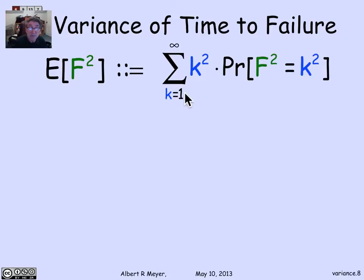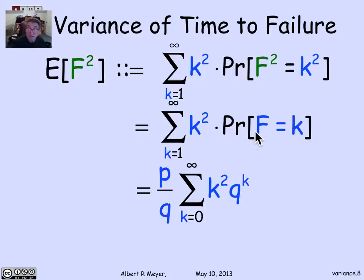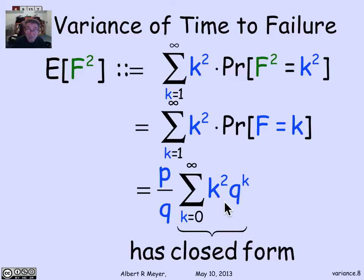The expectation of f squared is the sum from k=1 to infinity of k squared times the probability that f squared equals k squared — which is the same as the probability that f equals k, i.e., q^(k-1)·p. Factoring out p/q gives the sum from k=0 to infinity of k² q^k. This has a closed form via generating functions. We could compute E[f²] that way, then subtract (1/p)² for the variance. But let's use total expectation instead.